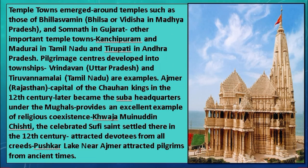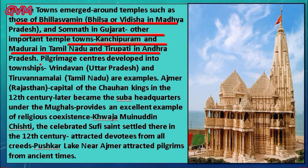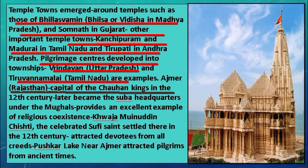Many cities grew and emerged as temple towns — for example, Bhilsa (also known as Vidisha) in Madhya Pradesh, Somnath in Gujarat, Kanchipuram and Madurai in Tamil Nadu, and Tirupati in Andhra Pradesh. Similarly, many pilgrimage centers also grew into towns — for example, Vrindavan in Uttar Pradesh, Tiruvannamalai in Tamil Nadu, and Ajmer in Rajasthan.